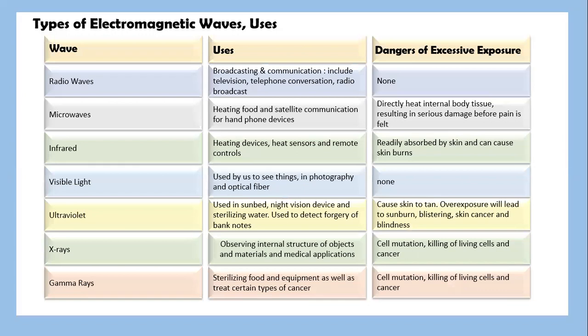Let's look into the types of electromagnetic waves, their uses, and the dangers of excessive exposure. Radio waves are used in broadcasting, communication, television, telephone conversations, and radio broadcasts. In terms of the risk or danger of excessive exposure, there is none.